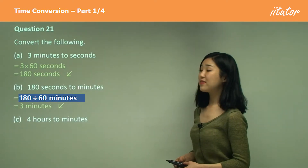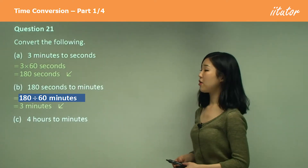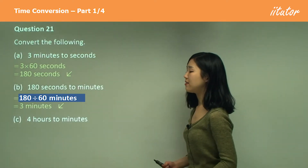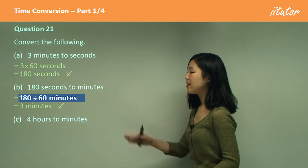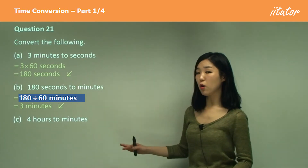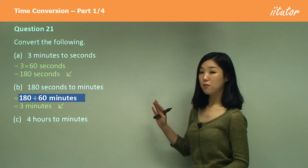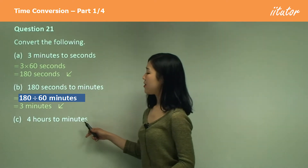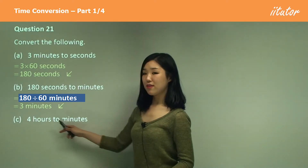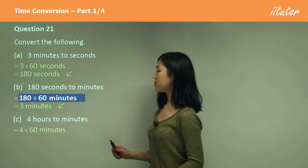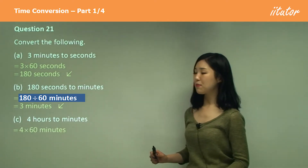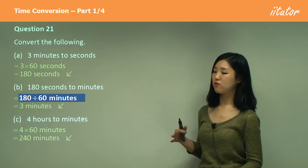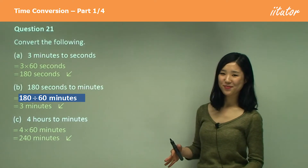C: four hours to minutes. Four hours to minutes, which is large to small. So we must multiply, and you know that there's 60 minutes in an hour. So we simply do four times 60 minutes, which is 240 minutes. Easy.